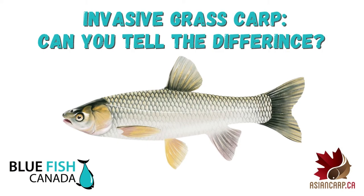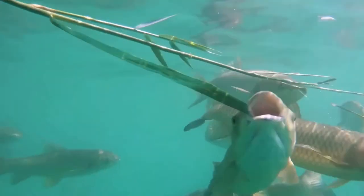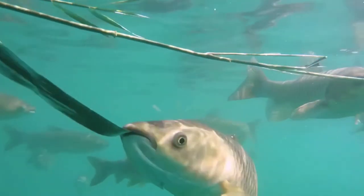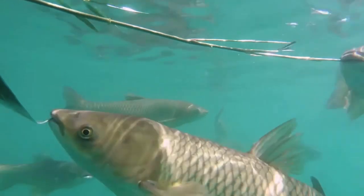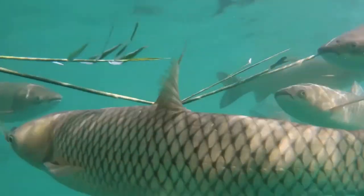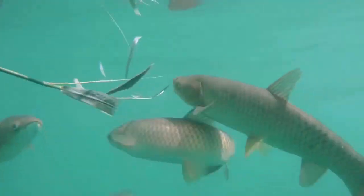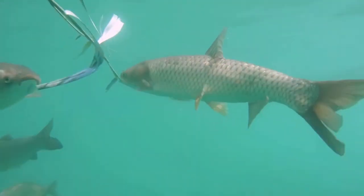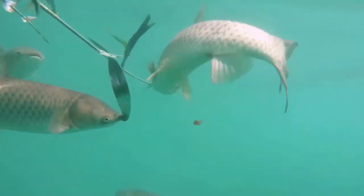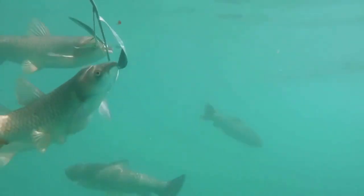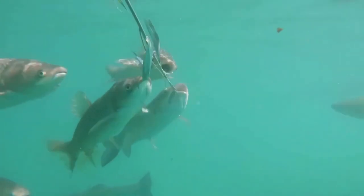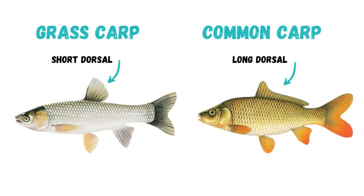Grass carp can consume up to 40% of their body weight in aquatic vegetation each day, laying waste to vital fish habitat. It's important that anglers know how to identify invasive grass carp.